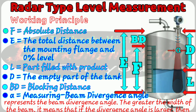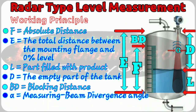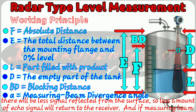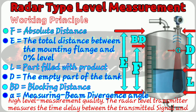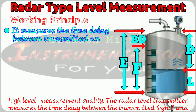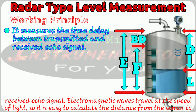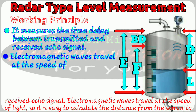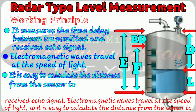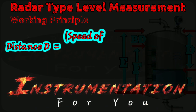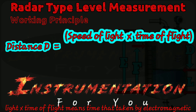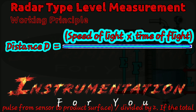Alpha is the measuring beam diversion angle — the width of the measured beam represents the beam diversion angle. If the diversion angle is larger, there will be less signal reflected from the surface, so less echo signal will return to the receiver. If the measuring beam of the level transmitter is narrower, then the level transmitter is more sensitive. Therefore, a narrow beam can ensure fairly high level measurement quality. The radar level transmitter measures the time delay between the transmitted signal and received echo signal. Electromagnetic waves travel at the speed of light, so the distance D is calculated as: D equals the speed of light multiplied by the time of flight, divided by 2.